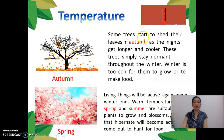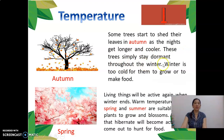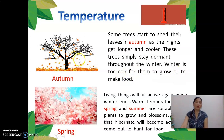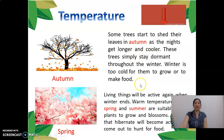Some trees start to shed their leaves in autumn as the nights get longer and colder. This is a way to stay dormant throughout the winter. Winter is too cold for them to grow or to make food, so that's why the leaves fall down. That is how plants adapt to temperature.